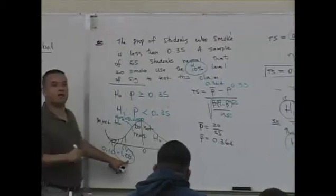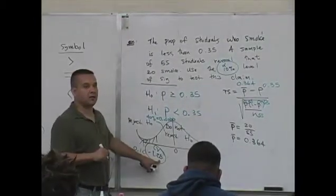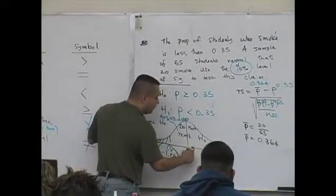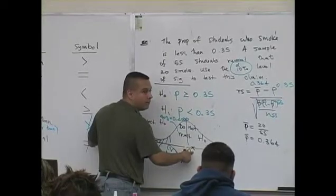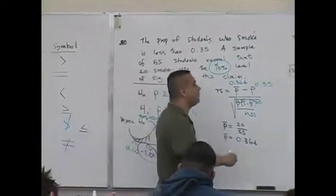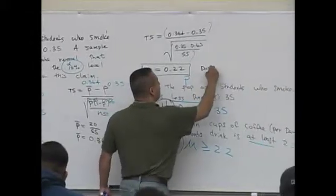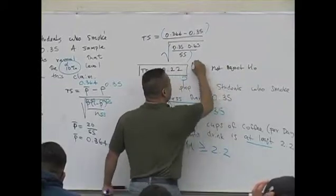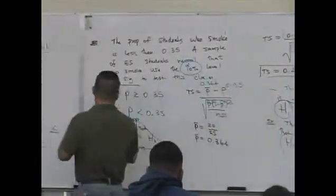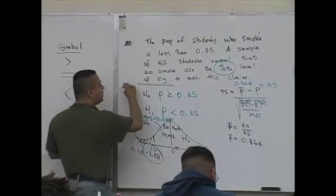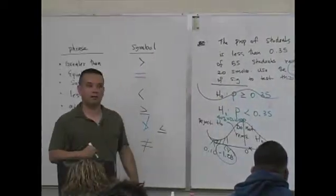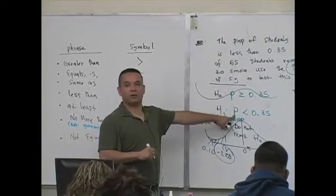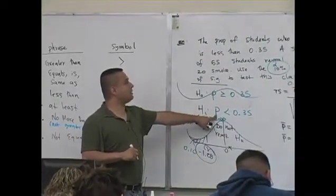If your critical values are to the nearest hundredth, compute your test statistic to the nearest hundredth because you're going to compare it. 0.22 is right here. It's in the do not reject region. Do not reject the null. So if we go back, do not reject the null is that statement - we accept the alternate. The proportion is less than 0.35. Does this always happen? The answer is no.